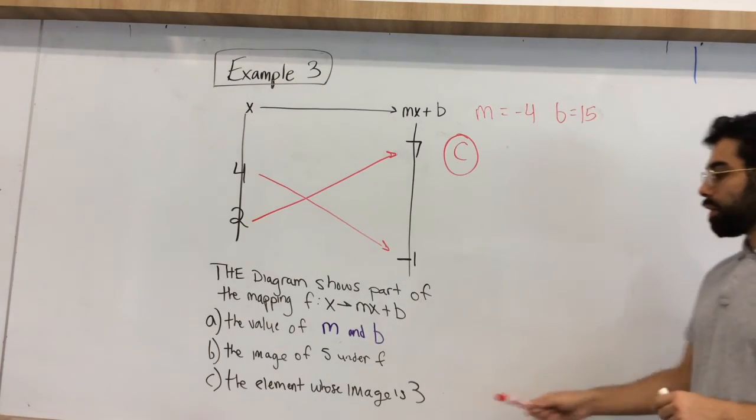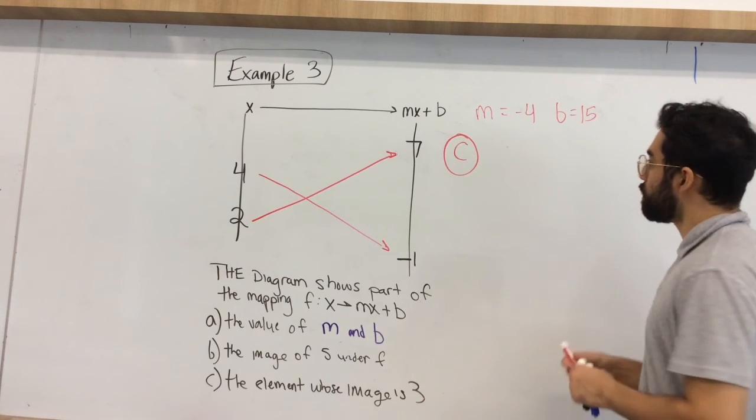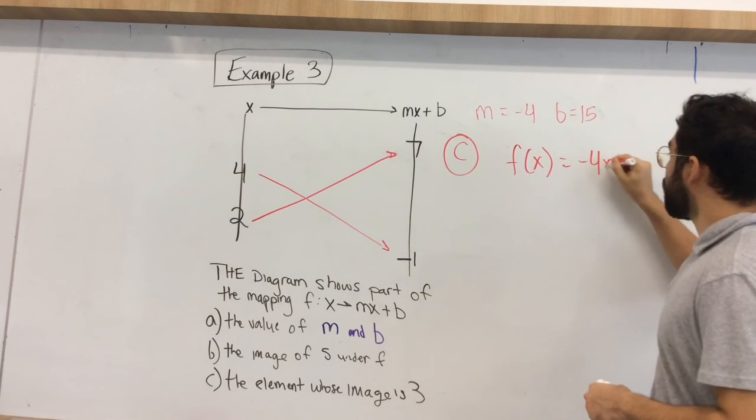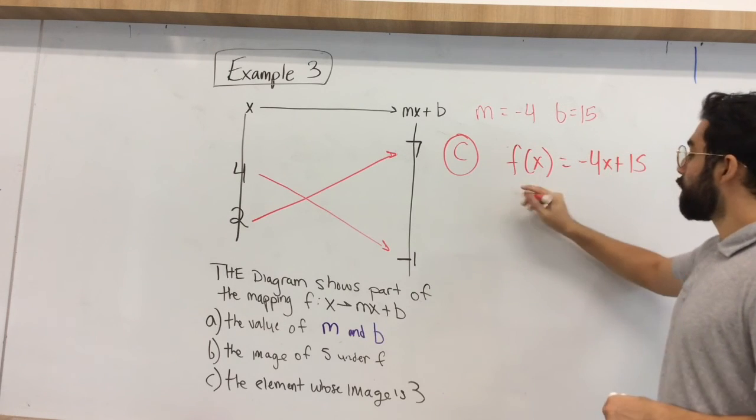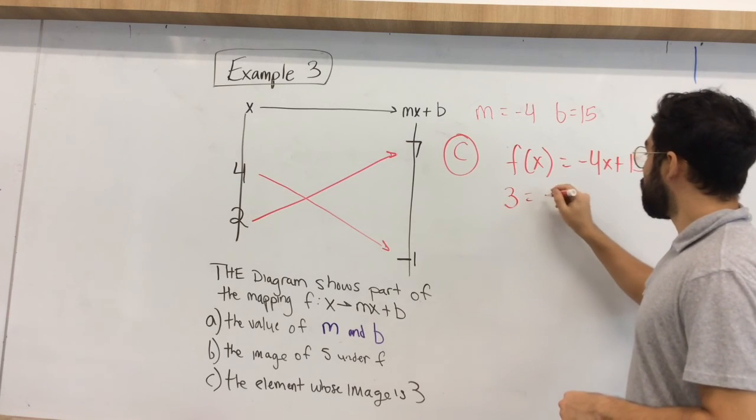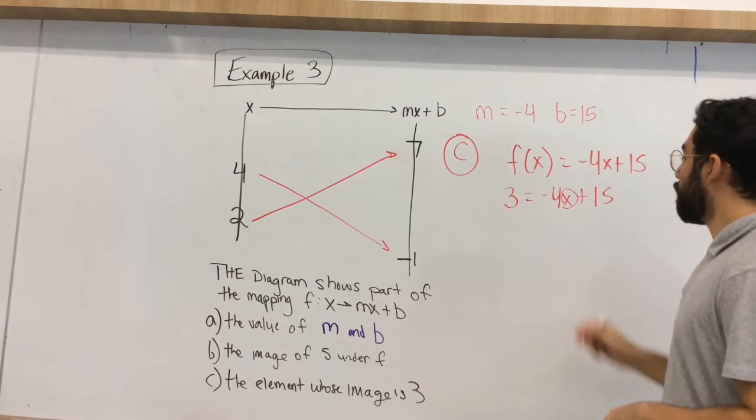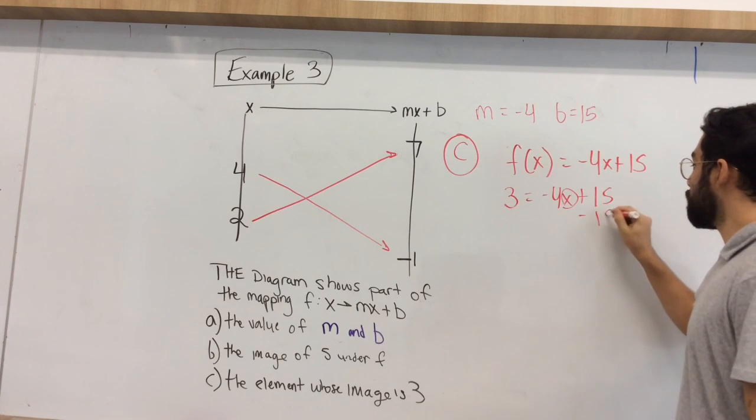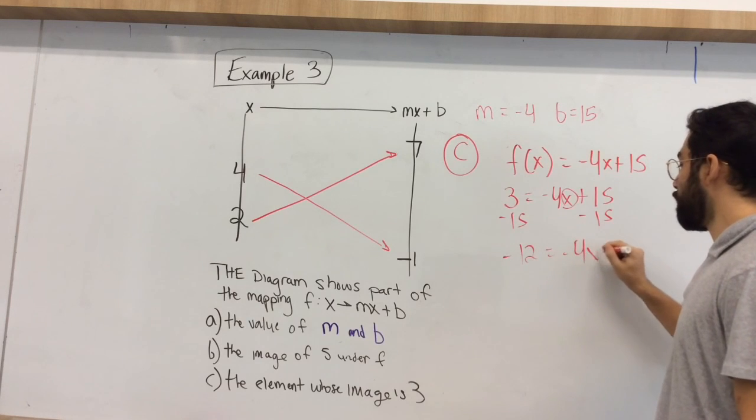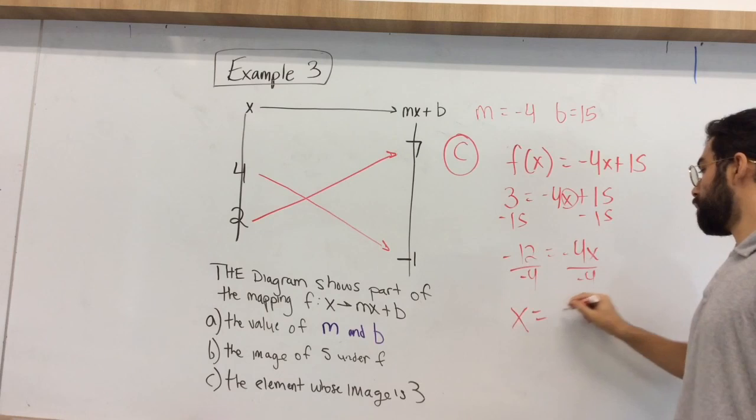All right, for c, c tells us what is the element whose image is 3. So image meaning the output is 3. So what we have here is f of x, and rewrite our equation, negative 4x plus 15. Well, f of x, our image, is 3. We have to figure out what our x value of our input is. Minus 15, so negative 12 is equal to negative 4x. So x is equal to 3.